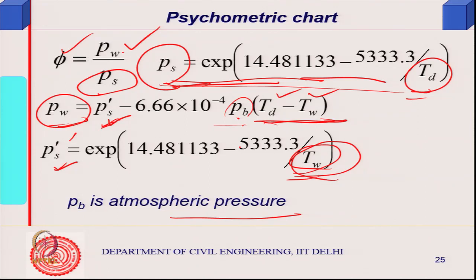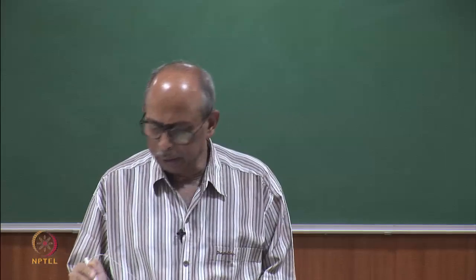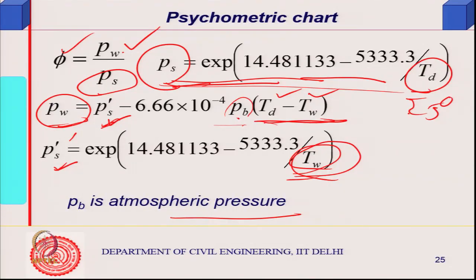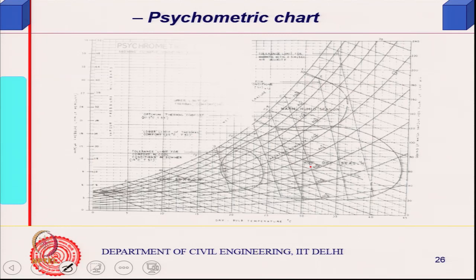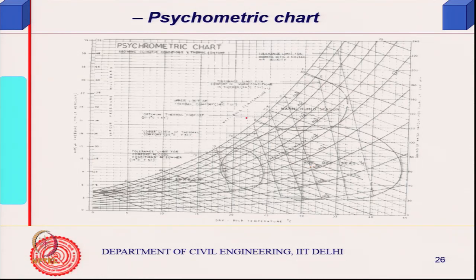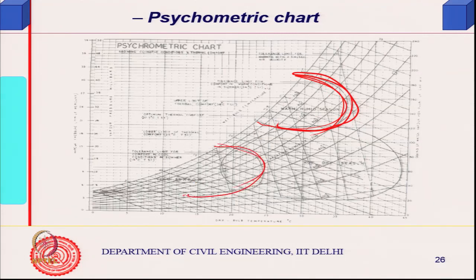If you know dry bulb temperature, wet bulb temperature, and atmospheric pressure, you can find P_w, and from P_w, the relative humidity phi can be obtained. For example, if the temperature is 30 or 35 degrees centigrade and wet bulb temperature is known, you can find relative humidity. If relative humidity and dry bulb temperature are known, finding wet bulb temperature is a transcendental situation. Returning to the psychrometric chart, you can plot TSI values for various seasons—for example, warm humid situations where relative humidity is very high.